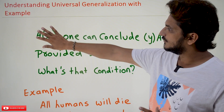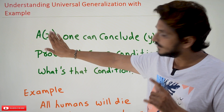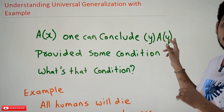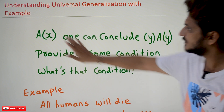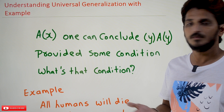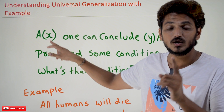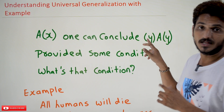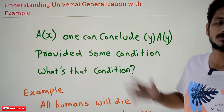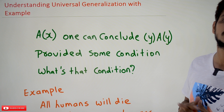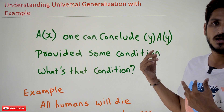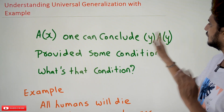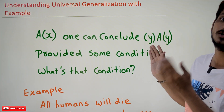Coming to today's class: given that A(x) is true, can you conclude that for all y, A(y) is going to be true? Can we say that statement from this statement? No, we cannot say that, because A is true for only one single subject. From this we cannot conclude that A(x) is going to be true for all subjects. This is called universal generalization — if you say A(x), one can conclude for all y, A(y).